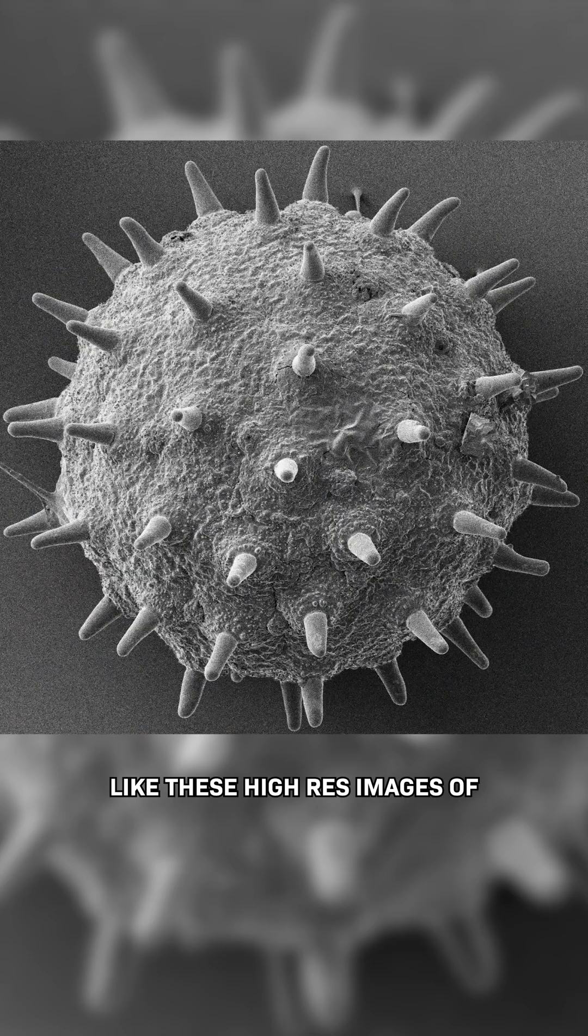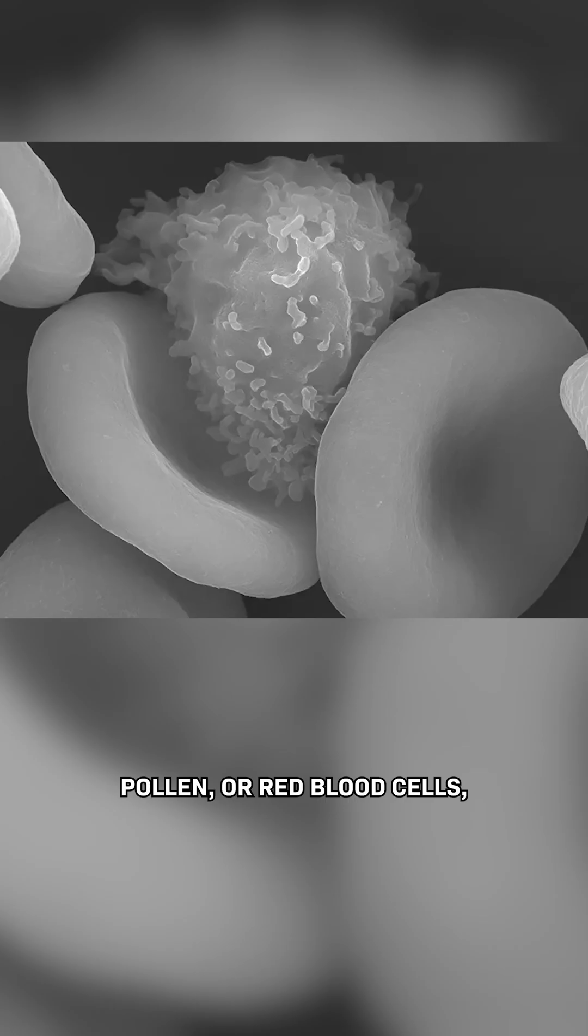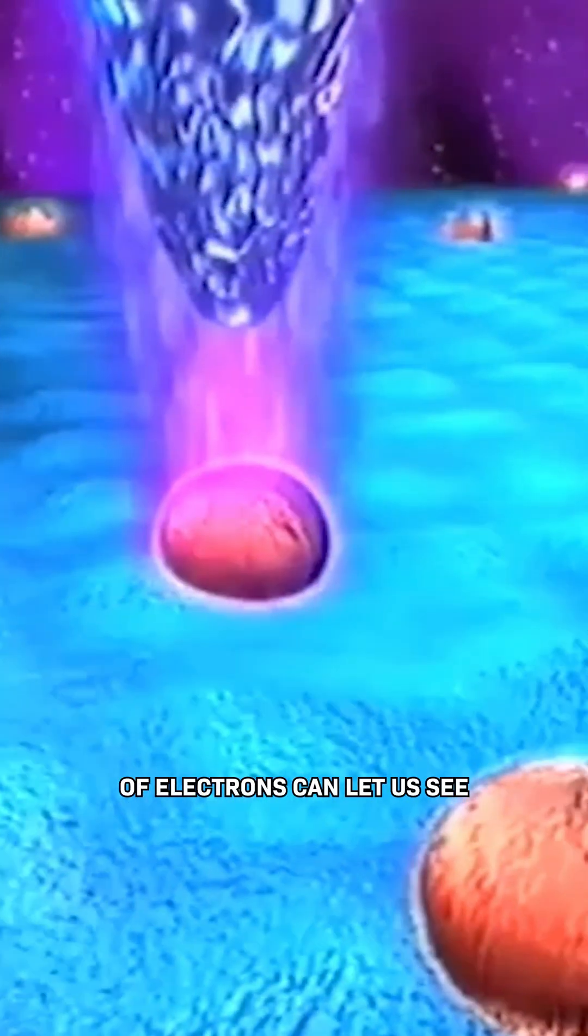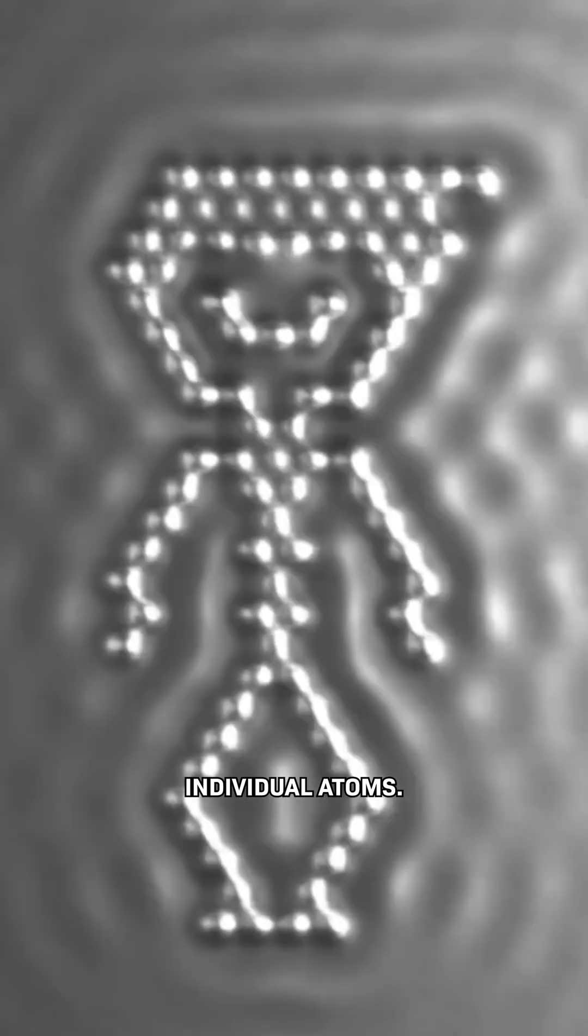And we can see things like these high-res images of pollen or red blood cells or snow crystals, and even higher resolution microscopes that use the quantum properties of electrons can let us see individual atoms.